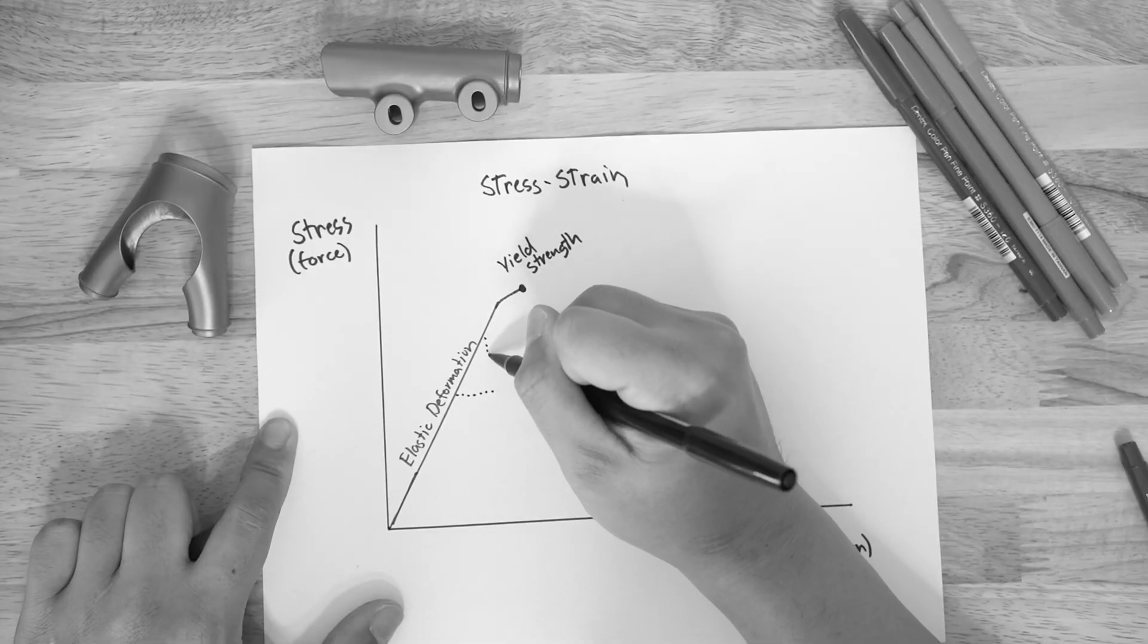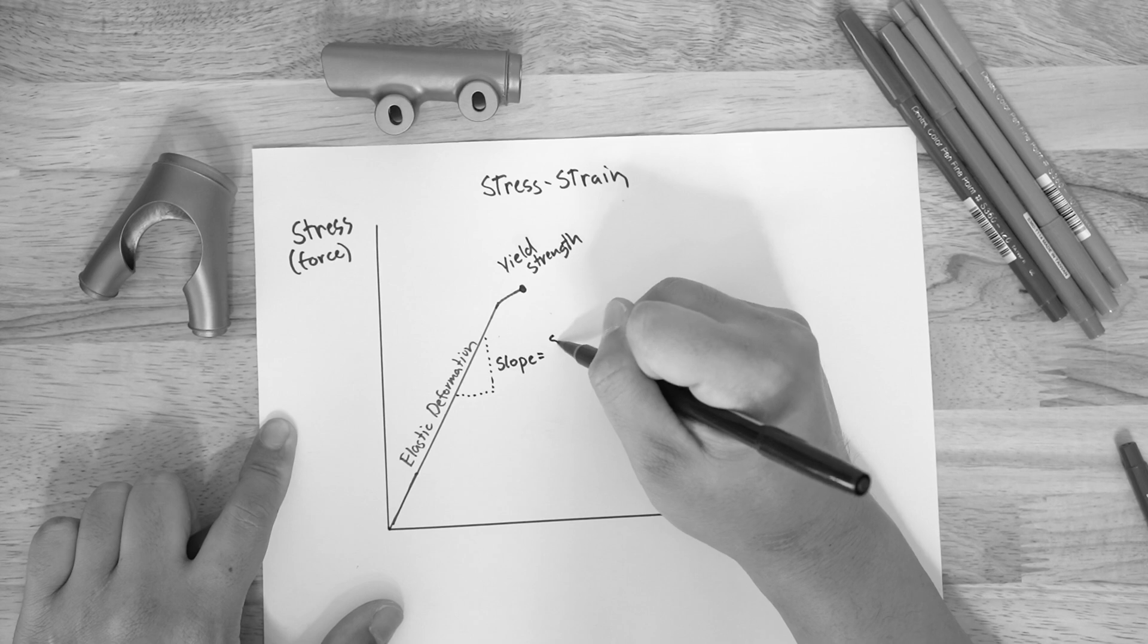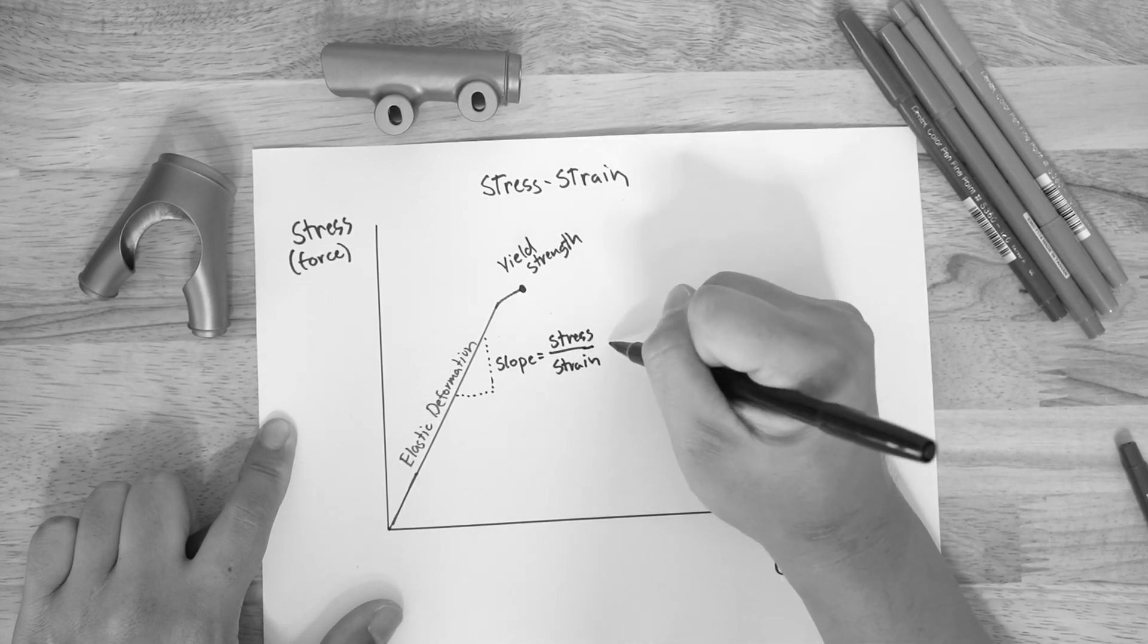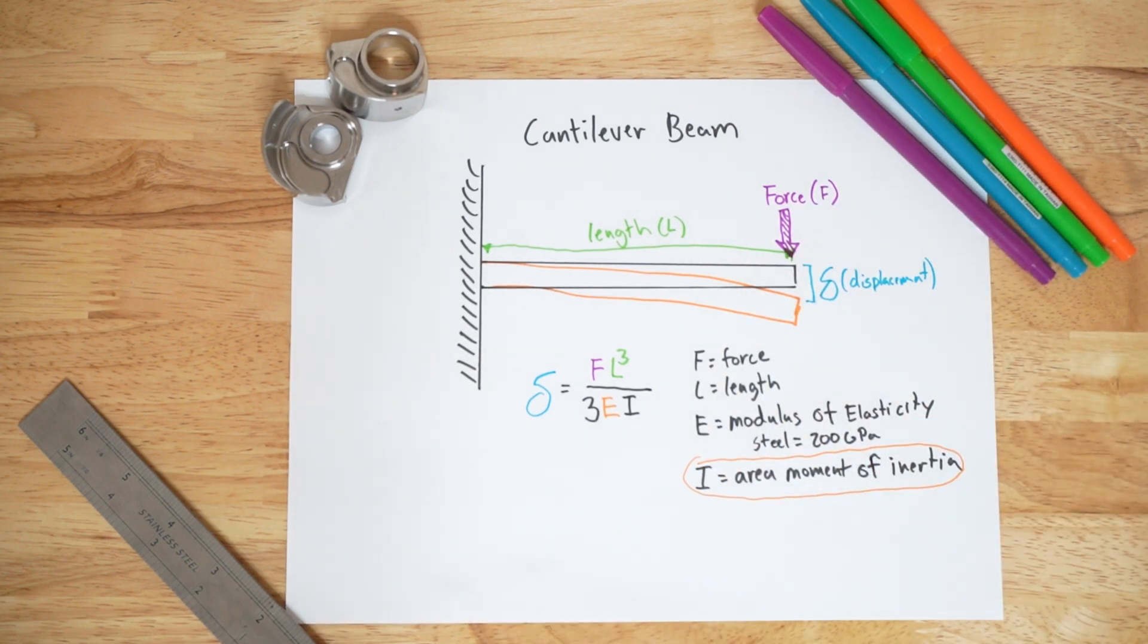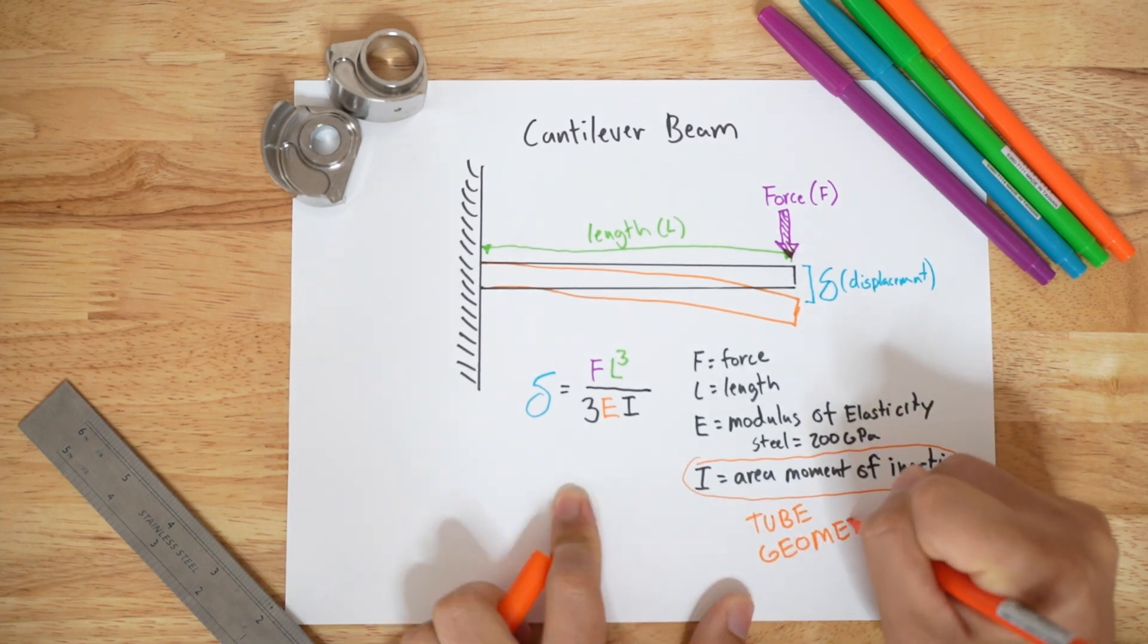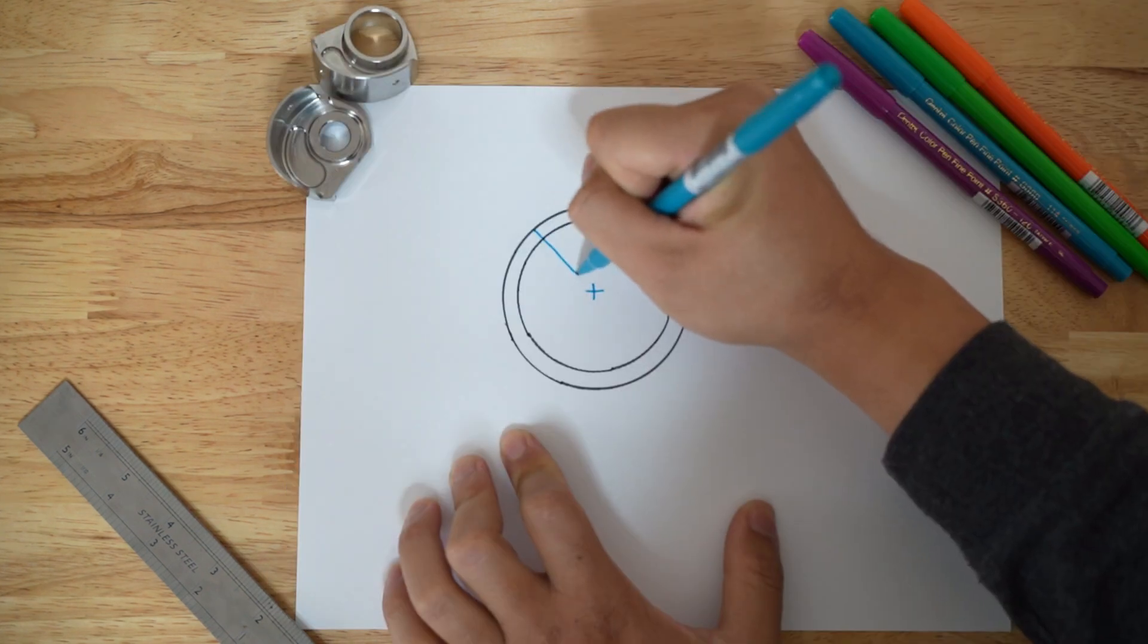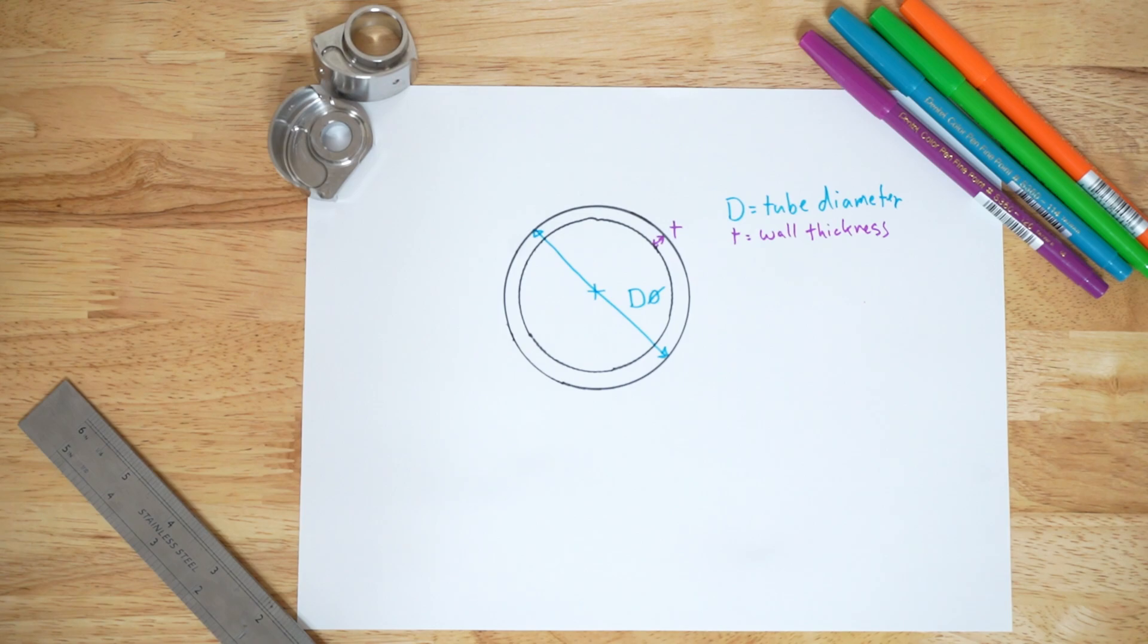Throwing back to part 1, E is the modulus of elasticity. It is the slope of the stress-strain curve. For steel, this value is 200 gigapascals. I is known as the area moment of inertia. Don't let the name scare you away. The area moment of inertia is the number that describes the contribution of the tube's geometry to the stiffness. It is the parameter we tune with tube diameter and butting in order to achieve the stiffness we want.